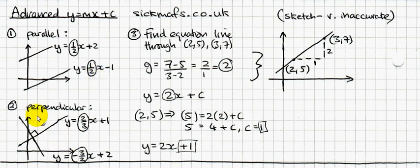The second thing you need to know is if you've got two perpendicular lines, lines that are 90 degrees to each other, the gradients are going to be opposite to each other, not exactly the same, but the opposite.